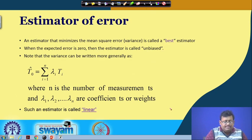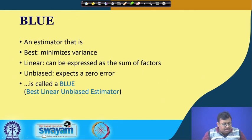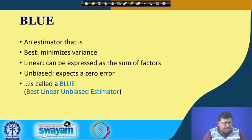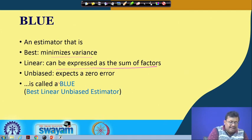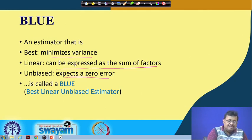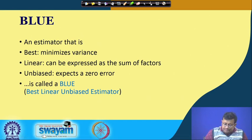The variance can be expressed as a summation of individual weights, and that is why it is called BLUE — Best Linear Unbiased Estimator. B stands for minimizing variance, L stands for being expressible as the sum of weighted factors, and U stands for unbiased, meaning zero error. Kriging, which is an important geostatistical interpolation, is a BLUE estimator.